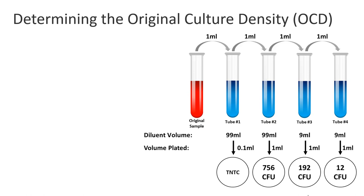You've got all that information to determine the original culture density. We're trying to figure out how many cells per milliliter. That's how we determine OCD in cells per ml or CFUs per ml—colony forming units in that original sample or original culture.